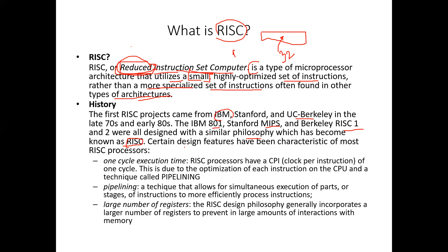Certain design features are characteristic of most RISC processors. One is one-cycle execution time: RISC processors have a CPI — clock cycles per instruction — that is fixed for each instruction. The execution time of one cycle is fixed. This is due to optimization of each instruction on the CPU and a technique called pipelining.